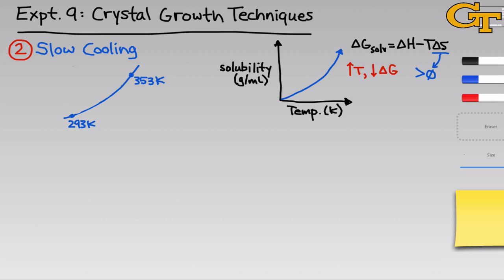Imagine we had two points on this curve, which are pretty typical for a slow cooling experiment. One is 293 Kelvin, that's room temperature, and the other is 353 Kelvin, which is our elevated temperature. So we take a solvent, and we dissolve the solute in the solvent at 353 Kelvin as much as possible. We create a saturated solution so that we're on this curve, we're at the maximum solubility at 353 Kelvin.